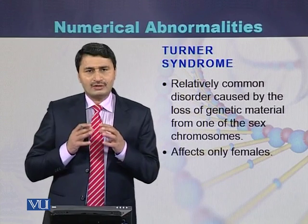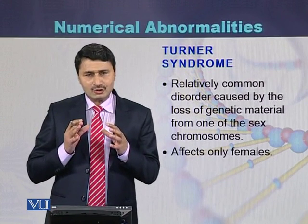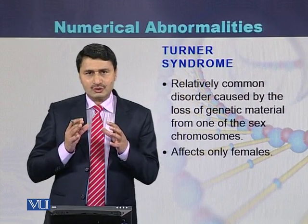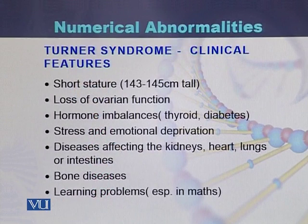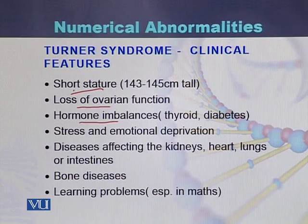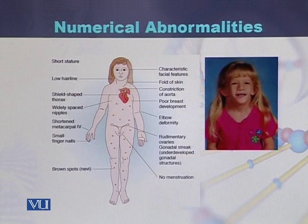The second example of numerical changes in chromosomes is Turner syndrome, which is found in females and is due to variation in the sex chromosomes. The clinical features of affected individuals include short stature, loss of ovarian function, hormone imbalances, stress and emotional deprivation, diseases affecting the kidney, heart, lungs and intestine, bone diseases, and learning problems. These are the features which can be seen in children with Turner syndrome.